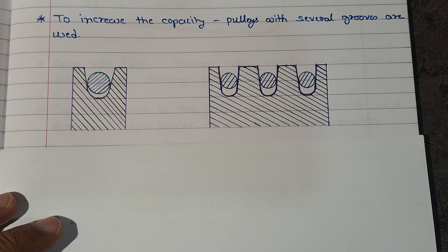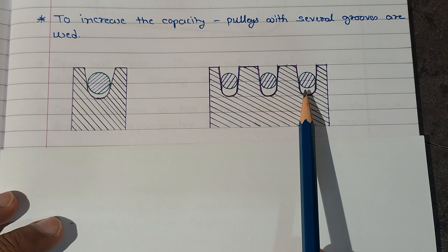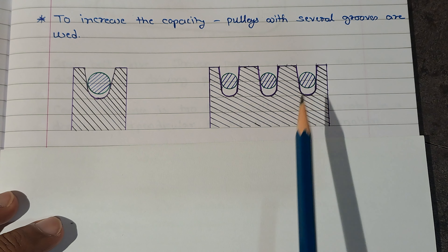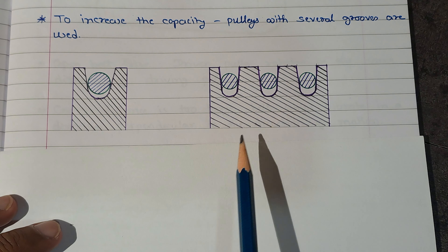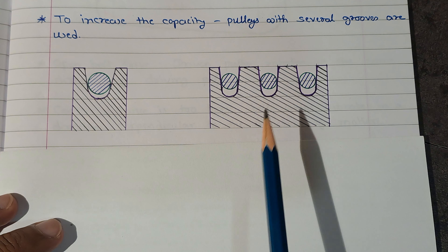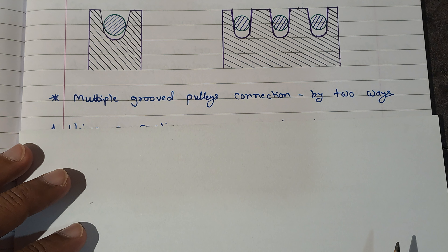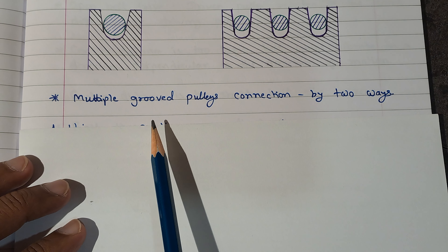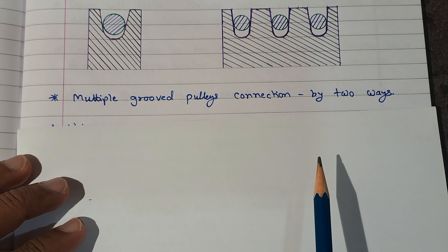To increase the power capacity of the rope drive, more than one groove is provided depending on the requirement of power transmission capacity. As seen in the figure, this is a pulley having three grooves. Multiple grooved pulleys are connected by two ways.